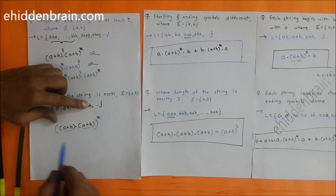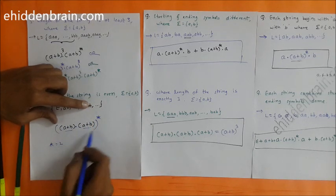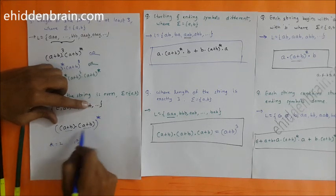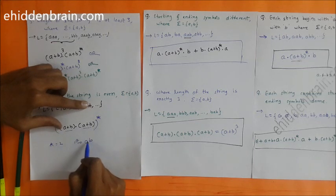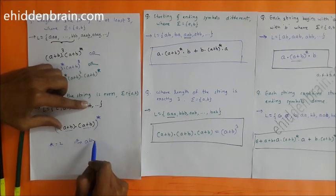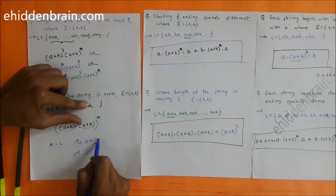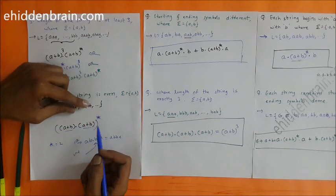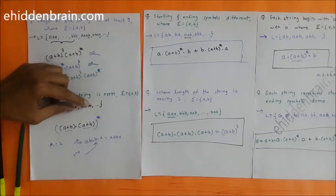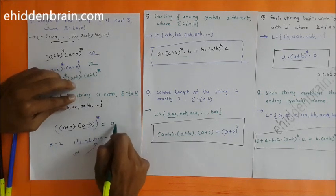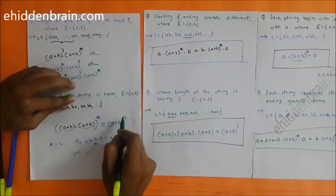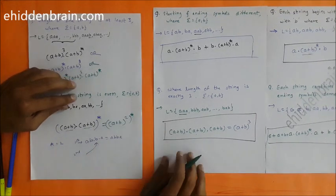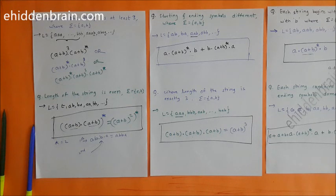When star is 2, we go inside the bracket twice, generating a four-length string — for example selecting 'a','b' the first time and 'b','a' the second gives 'abba'. When star is 3, we get a six-length string, and so on — always an even-length string. This can also be written as (a+b)² raised to star, i.e., ((a+b)²)*. I hope you enjoyed this video; if you have any doubts or questions please put them in the comment section.